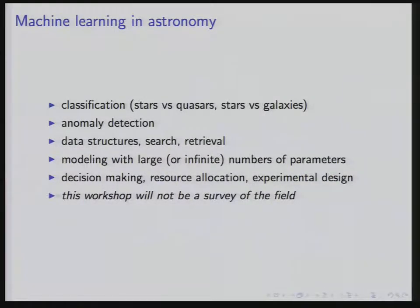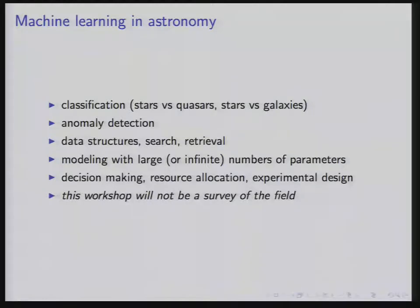There are a lot of places where machine learning could be very valuable in astronomy, and in fact there are a lot of places where machine learning is already having a huge impact. I'm going to talk about some classification stuff in the middle of this presentation. There's a lot of anomaly detection things that people are thinking about. A lot of astronomers image the sky continuously and take spectra continuously, and finding anomalies in unusual objects is a really big part of what we do. Astronomy really is, in some ways, the study of anomalies.